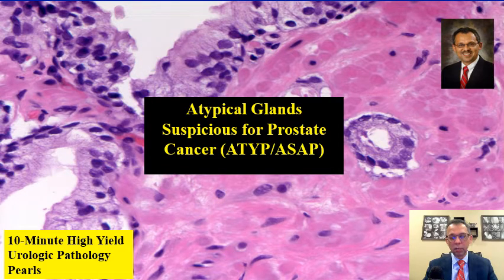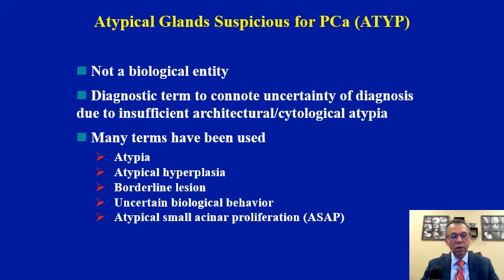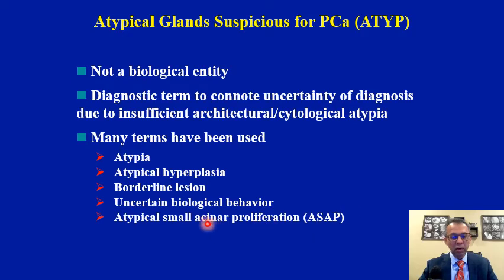This has often been a problematic area for pathologists as well as patients, because they may have to have more follow-up. Keep in mind that this entity — what we call ATIP or ASAP — is not a biological entity. It is the term we use to connote our uncertainty of diagnosis due to either insufficient architectural, cytological, or sometimes quantitative features, or sometimes due to confusing immunohistochemistry. A variety of terms have been utilized to describe these lesions: atypia, atypical hyperplasia, borderline lesion, uncertain biological behavior, atypical small acinar proliferation. ATIP and ASAP are perhaps the most widely utilized in clinical practice because urologists are also quite familiar with these two terms.